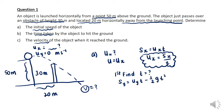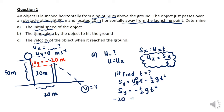We use sy equals uy·t minus half·g·t². The sy here is the height from the launching point to where it passed over the obstacle, so sy equals negative 20 meters (negative referring to the downward direction). Since uy equals zero, we cancel that term, leaving negative 1/2·g·t². Substituting all values gives t equals 2.02 seconds.